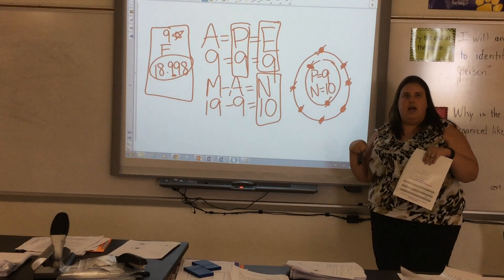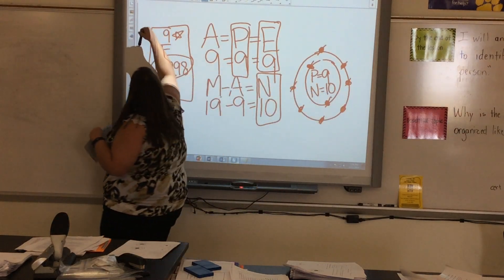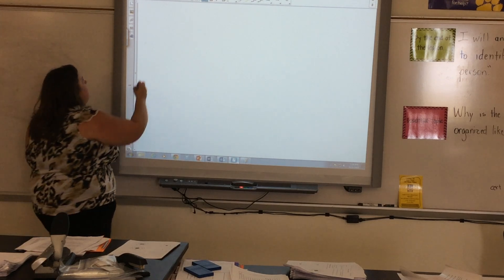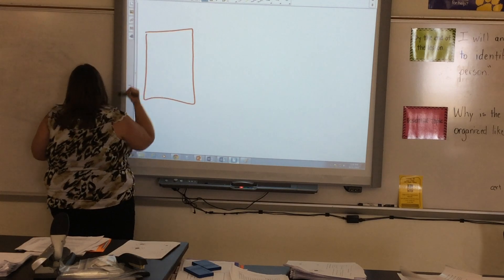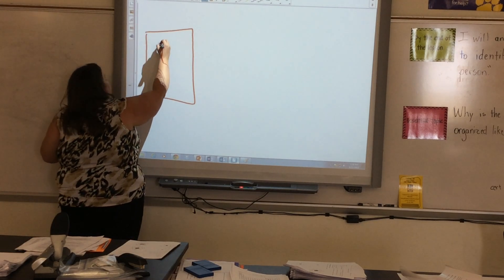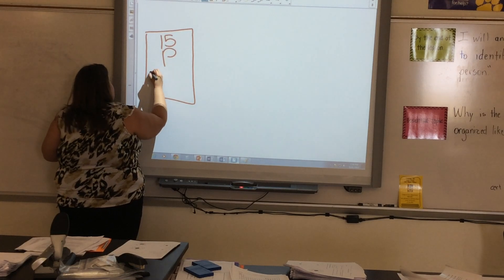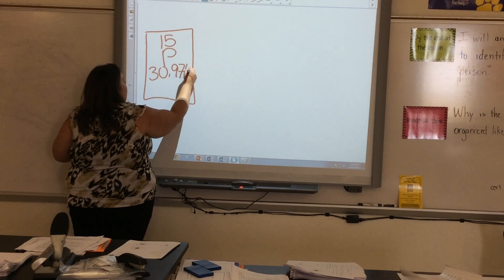Okay. This time we're going to do phosphorus. So my element box for phosphorus, it has an atomic number of 15. And it has a mass of 30.974.